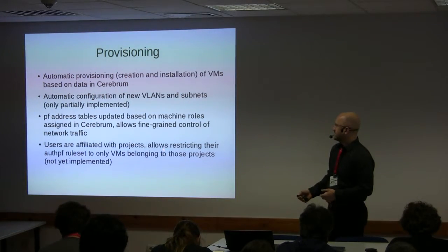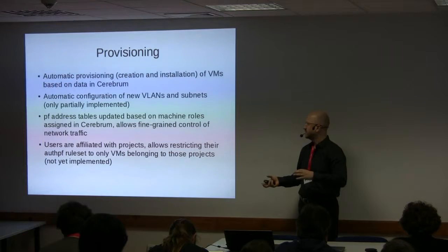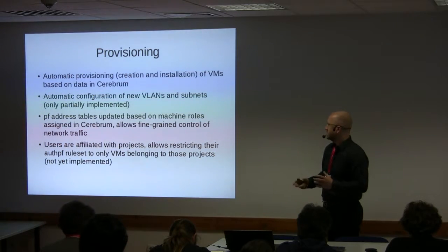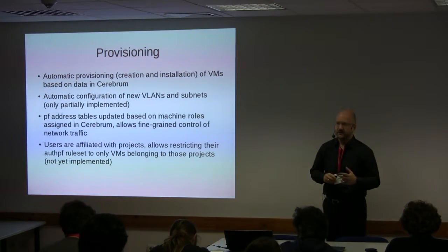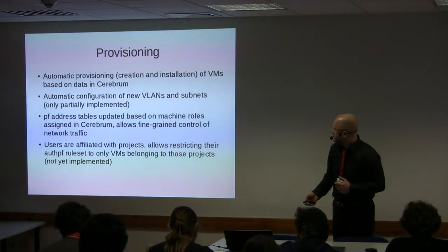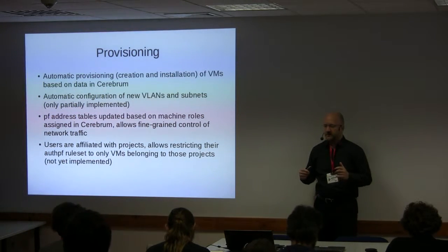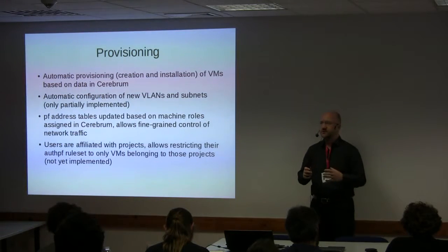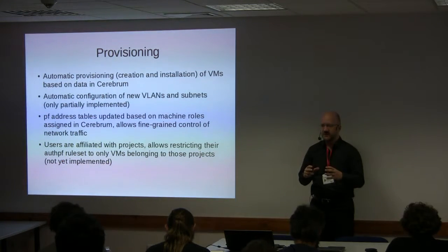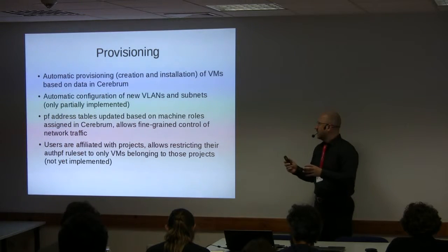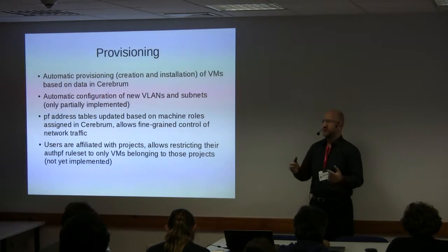Users are affiliated with projects, and in fact everything in the system is affiliated with a project — that's one of the modifications we made to Cerebrum. This means we can also have firewall rules specific to groups of users. If a user on project 42 logs in, the rules authPF installs into the PF rule set will only allow that user to access machines belonging to project 42.